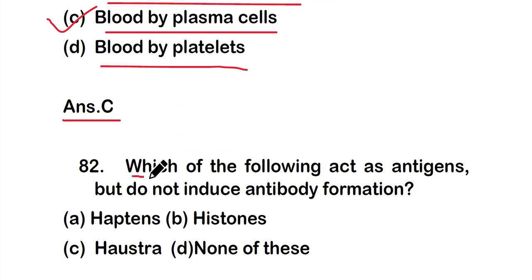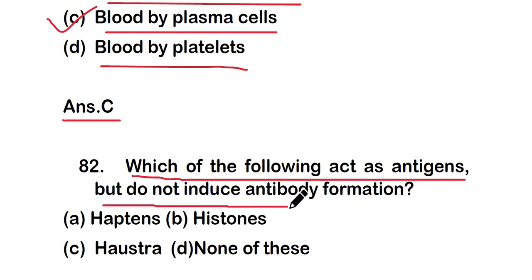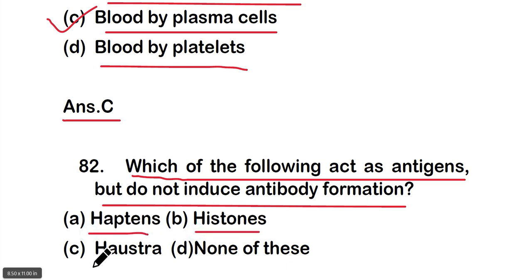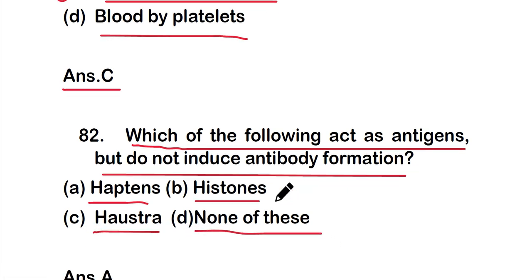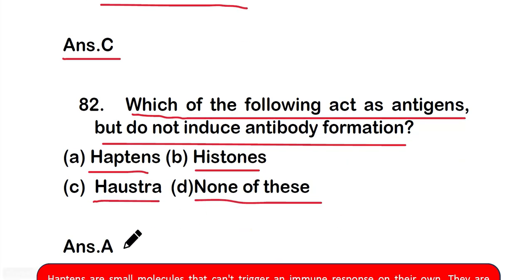Question number 82: Which of the following act as antigens but do not induce antibody formation? Option A: haptens, option B: histones, option C: ousters, or option D: none of these. The right answer is option A — haptens act as antigens but do not induce antibody formation or show immune responses.